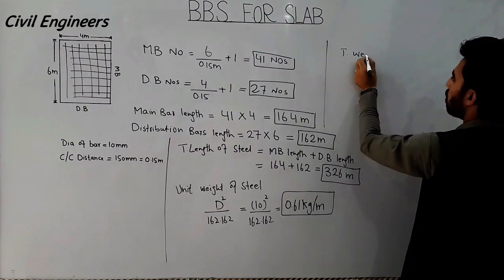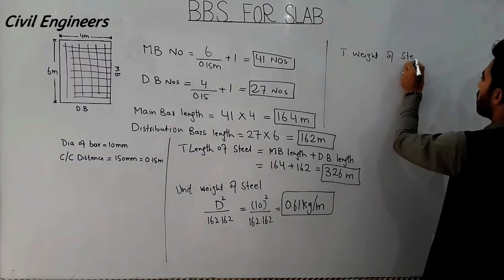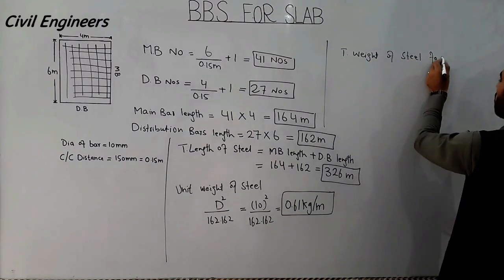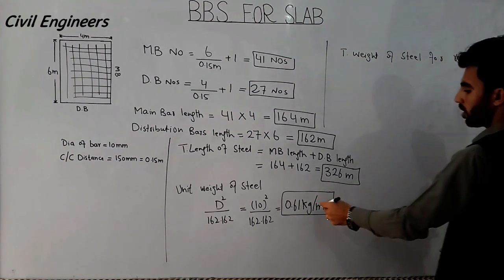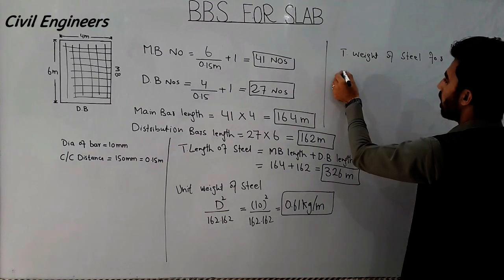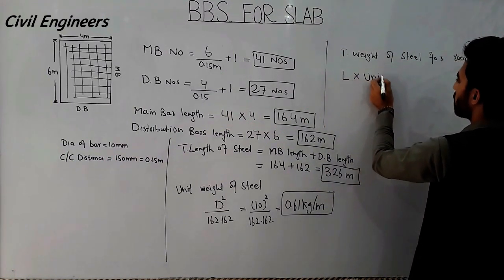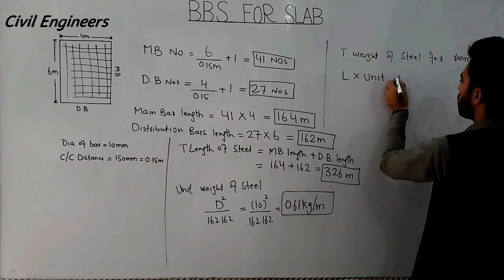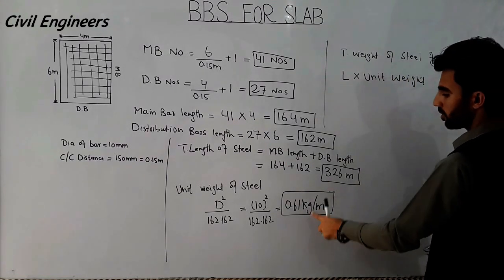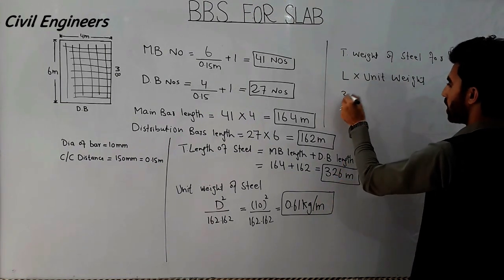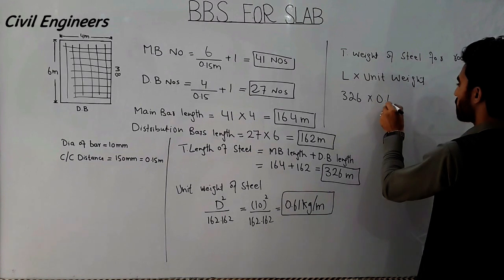Total weight of steel equals total length multiplied by unit weight. So 326 meters multiplied by 0.61 kg per meter gives the total weight.